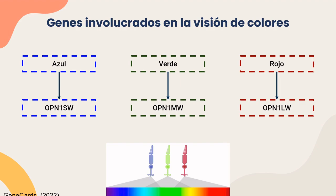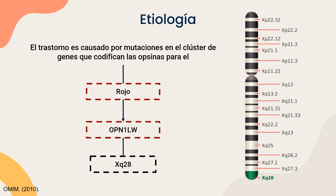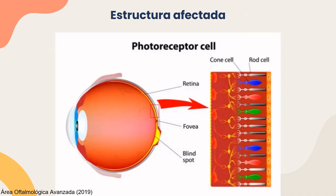A continuación encontramos los genes involucrados en la visión de los colores. Estos genes están estrechamente relacionados con los conos, ya que contienen el código genético para las proteínas opsinas, que constituyen fotopigmentos capaces de capturar luz de color rojo o de onda larga, luz de color verde o onda media, y luz de color azul de onda corta. En el caso de la protanopía, el trastorno es causado por mutaciones en el clúster de genes que codifican las opsinas para el color rojo, en este caso el gen OPN1LW con locus Xq28. Al estar mutado este gen, la estructura afectada son los conos, ya que habrá una ausencia de conos rojos y por lo tanto no se podrá captar este color.